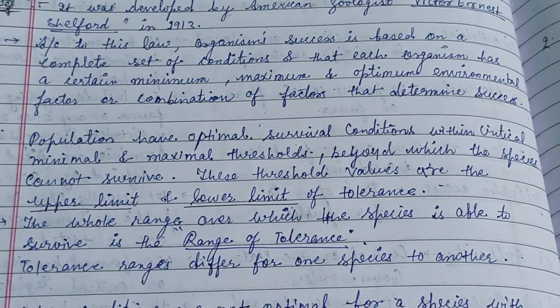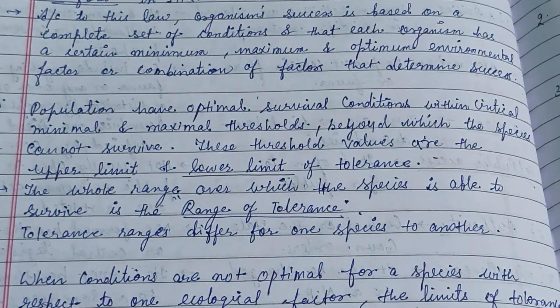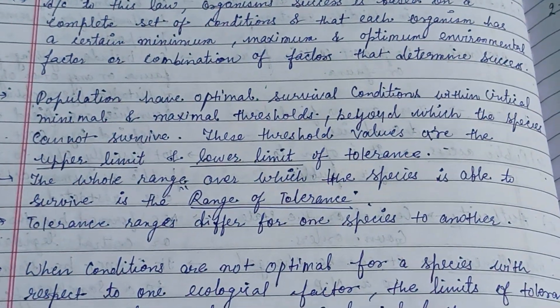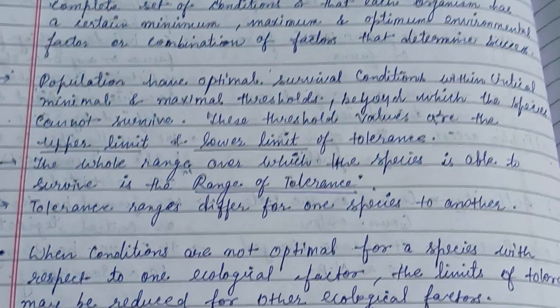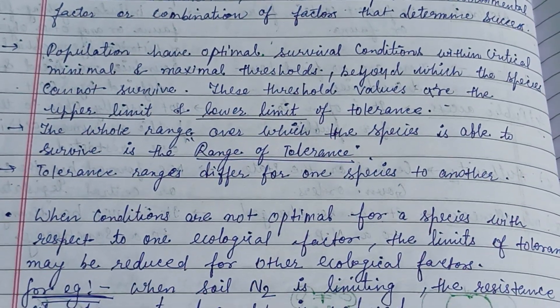According to this law, organism success is based on a complete set of conditions, and each organism has a certain minimum, maximum, and optimal environmental factor or combination of factors that determines success.